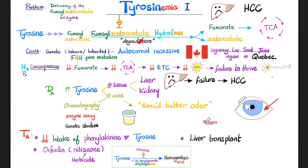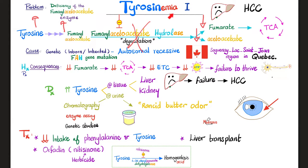If this enzyme is missing, say goodbye to fumarate — because if the block is here, everything after the block goes down, but everything before the block goes up. Fumarate is gone, acetoacetate is gone — your sources of energy are gone. What do you get? Failure to thrive. Before the deficient enzyme, everything accumulates: tyrosine, phenylalanine, fumarylacetoacetate — all going up and accumulating in your liver until you get liver cell failure. If this disease is not diagnosed and treated early, failure for years and years increases the risk of hepatocellular carcinoma. Repeated injury increases the risk of mutation, which increases the risk of cancer.